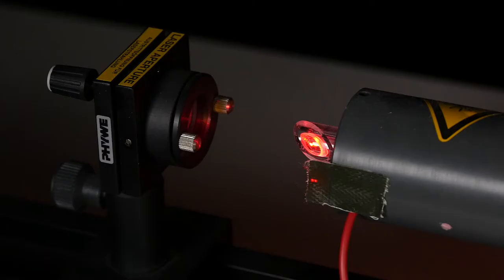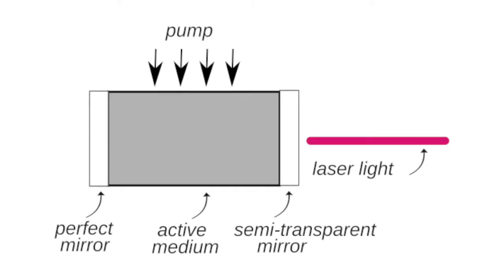Further outside are the optical resonators, that is a perfect and a semi-transparent mirror or, as in our design, two semi-transparent mirrors. Through them the light emitted in the active medium can be reflected, returned to the active medium and thus be fed back again. The laser radiation is amplified.